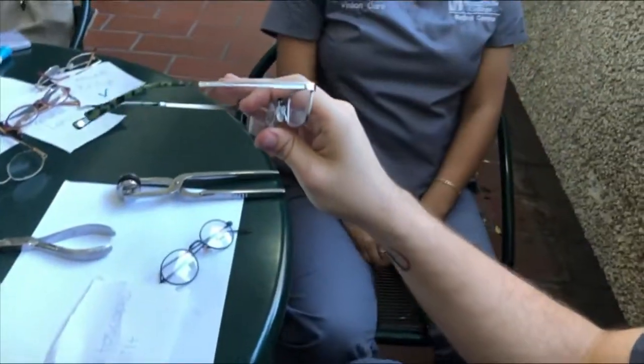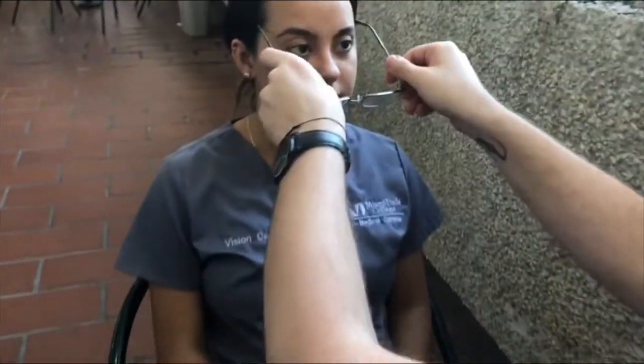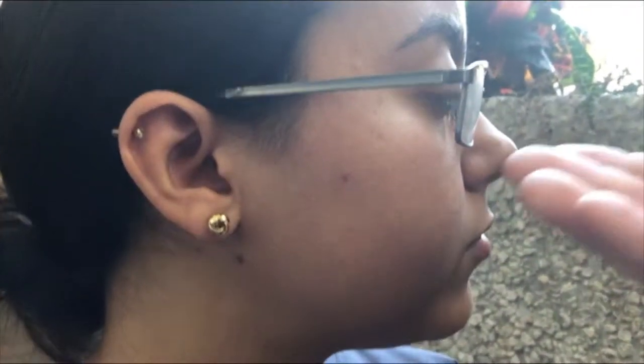Our next misalignment that we're going to talk about is panoscopic tilt. When we put this frame on the patient, when you look at it from the side, you can see that the bottom of the frame is closer towards the cheeks.